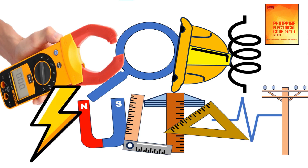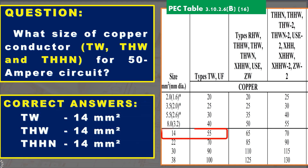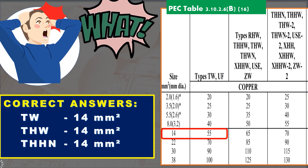Hello, fellow electrical practitioners, electricians, and future engineers. Welcome to Codesultant channel. You heard it right — 8-squared-millimeter THW and THHN are incorrect. The correct answers are 14-squared-millimeter TW, 14-squared-millimeter THW, and 14-squared-millimeter THHN.